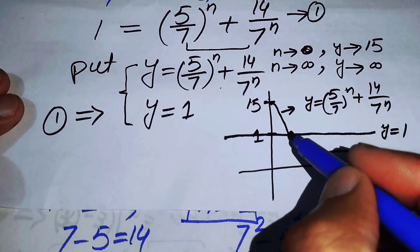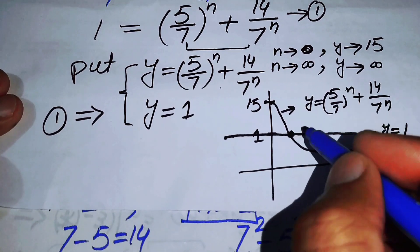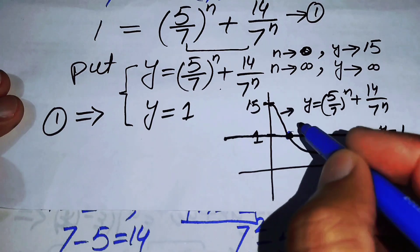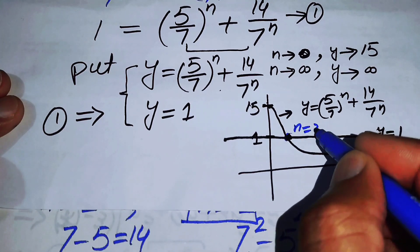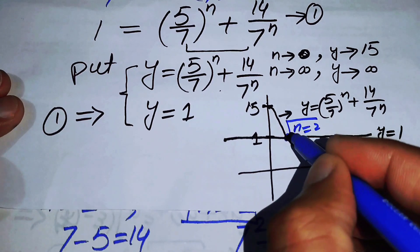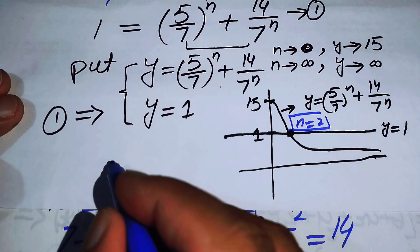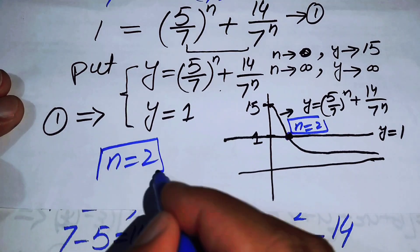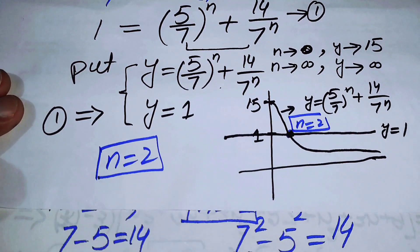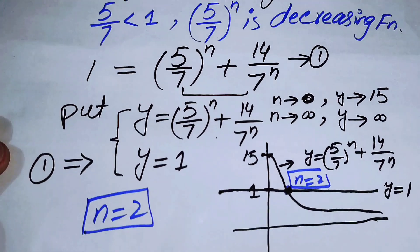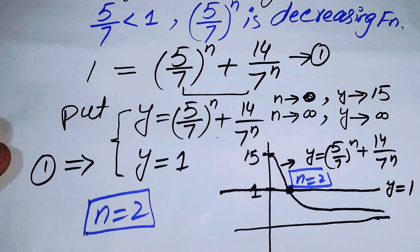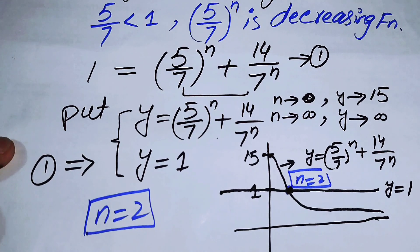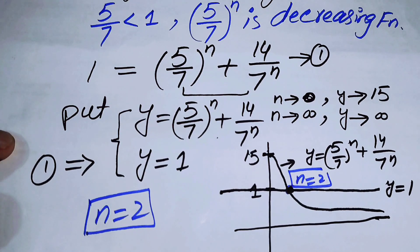Finally, we conclude that n equals 2 is the unique point of intersection, and therefore n equals 2 is the only solution to the given equation. Thank you so much for watching this video — please subscribe to my channel for more exciting videos.